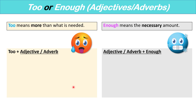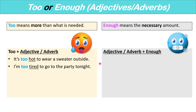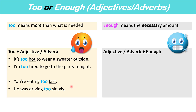Let's look at some more examples of 'too' versus 'enough.' We use 'too' before an adjective or an adverb. For example: it's too hot to wear a sweater outside; I'm too tired to go to the party tonight. In both of these examples, 'too' is a negative thing. We also use 'too' before an adverb: you're eating too fast; he was driving too slowly.